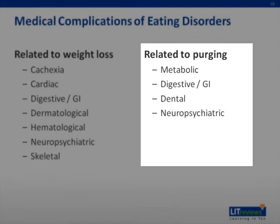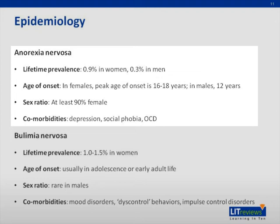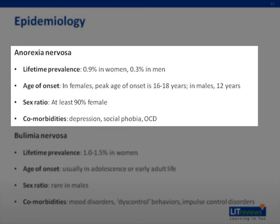Epidemiology of eating disorders. Anorexia nervosa has a lifetime prevalence of 0.9% in women and 0.3% in men. The peak age of onset in females is 16 to 18 years, and 12 years in males. At least 90% of affected individuals are female. There is a higher prevalence in occupations concerned with body weight, such as modeling and ballet students, and in higher social classes.